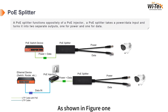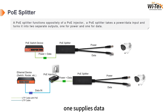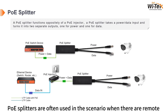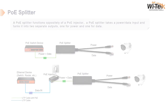As shown in figure 1, there are two output cables on one side of the PoE splitter — one supplies data and the other supplies power. In general, PoE splitters are often used in scenarios when there are remote non-PoE devices with no nearby AC outlets.